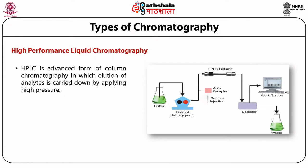High performance liquid chromatography, known as HPLC, is an advanced form of column chromatography in which elution of analyte is carried out by applying high pressure. The column is attached to a solvent delivery pump, the sample is injected automatically through an auto sampler, fractions are collected on a fraction collector, and results can be monitored directly on the system.